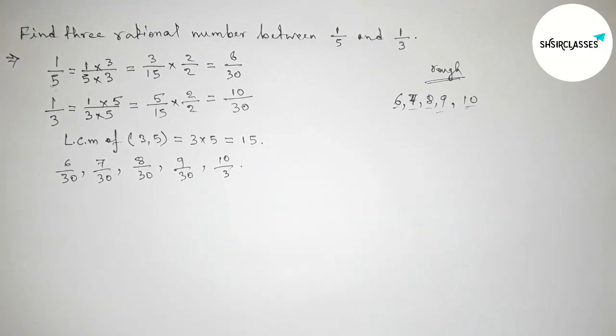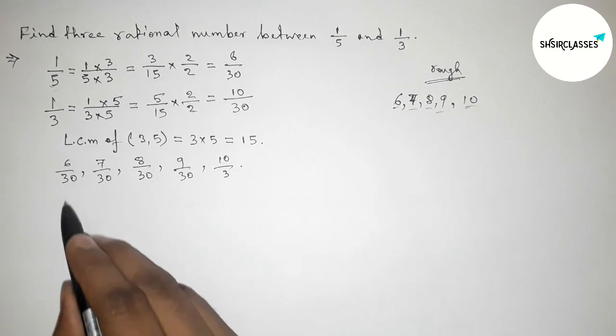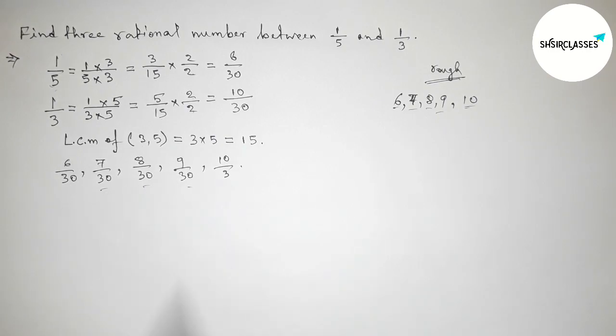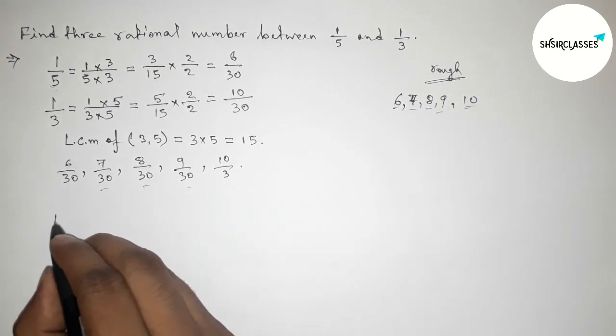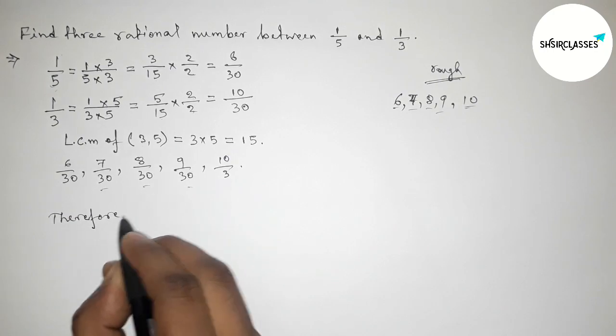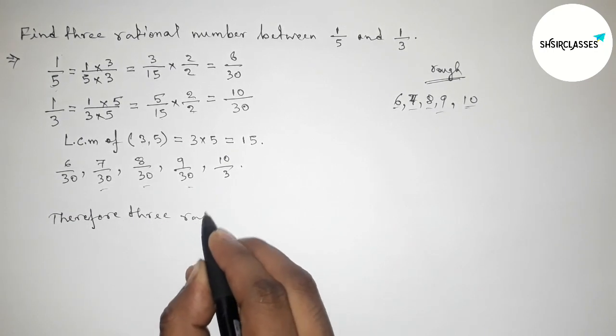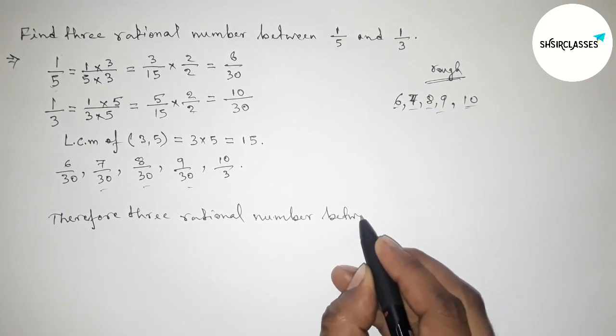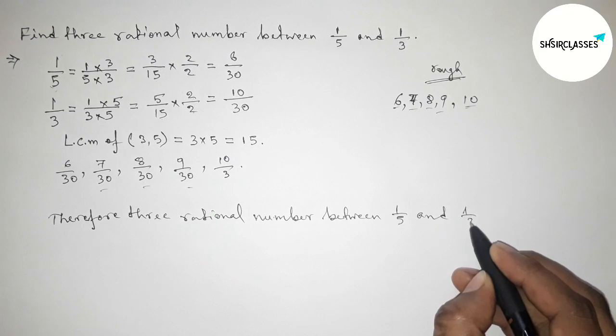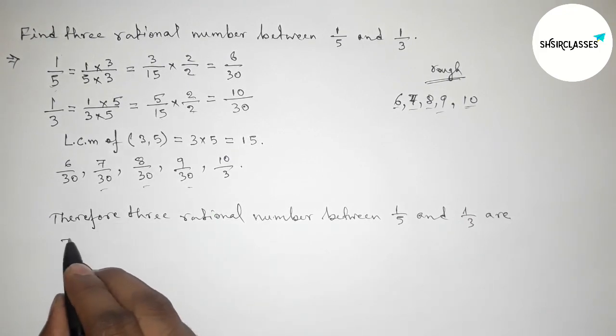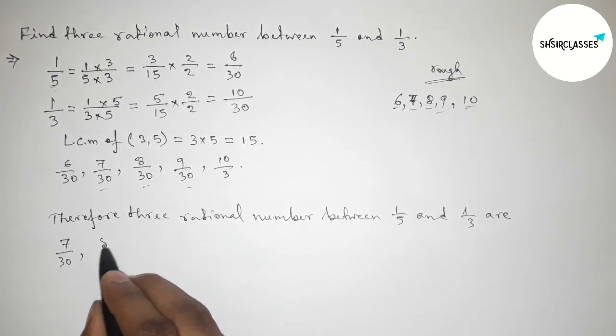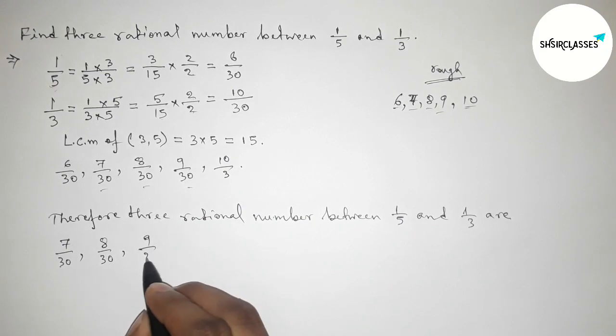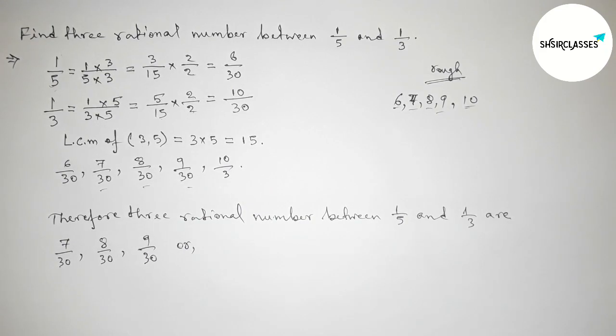Now first write down all the rational numbers: 6/30, 7/30, 8/30, 9/30, 10/30. Between these, these are three rational numbers. So between these, these are three rational numbers.